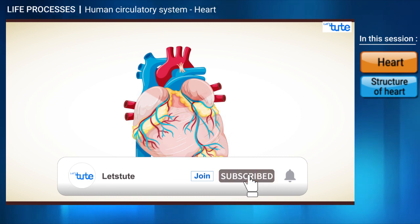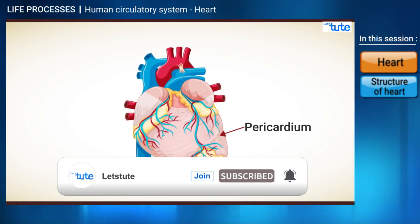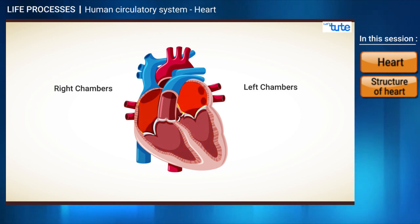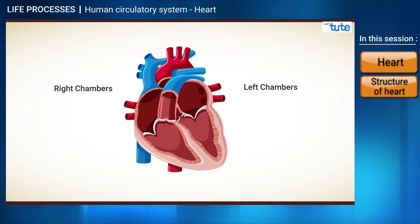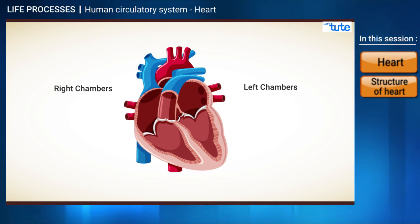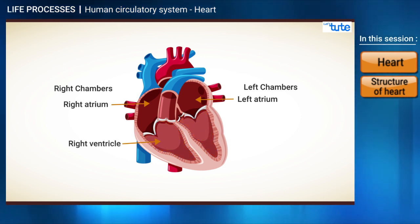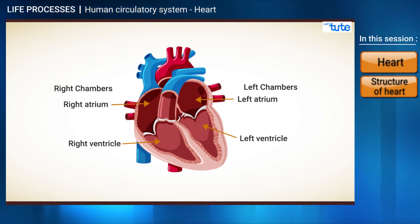It is externally protected by a double-membraned sac-like structure called the pericardium. Internally, it can be divided into four chambers. The upper two chambers are called the atria — they are the receiving chambers where blood is received: the left atrium and the right atrium. The lower two chambers are called ventricles — the right ventricle and the left ventricle — they are the discharging chambers from which blood is pumped out.